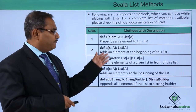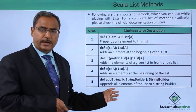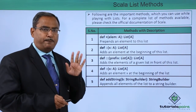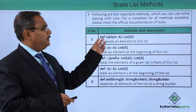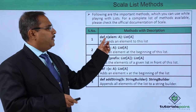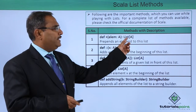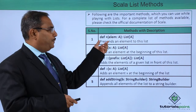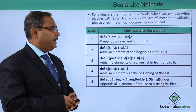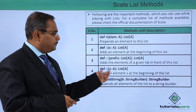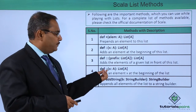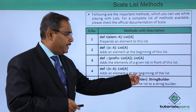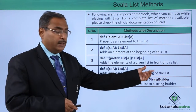Here you can find that so many methods are written along with a one-line description denoting the purpose of those methods. The method `def +: [A](elem: A): List[A]` prepends an element to the list. Another method using double colon `::` adds an element x at the beginning of the list.